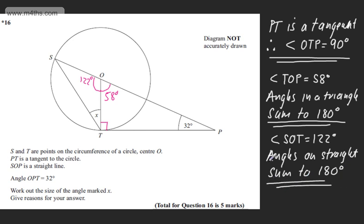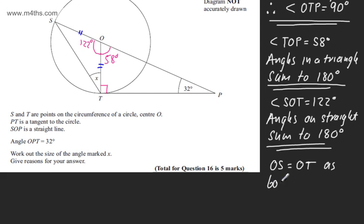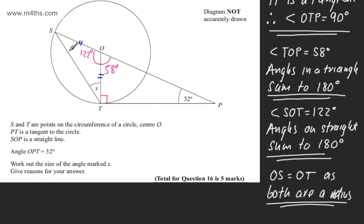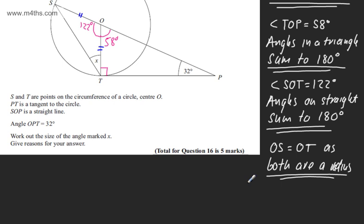At this stage, what I'm going to say is that OS will be equal to OT, as they are the radius. So we can say that OS will be equal to OT, as both are a radius. What that tells me is that the angles just here are going to be the same as it's an isosceles triangle. So we can say at this stage, the isosceles triangle—and I'm just using the triangle symbol—triangle SOT is going to be isosceles.